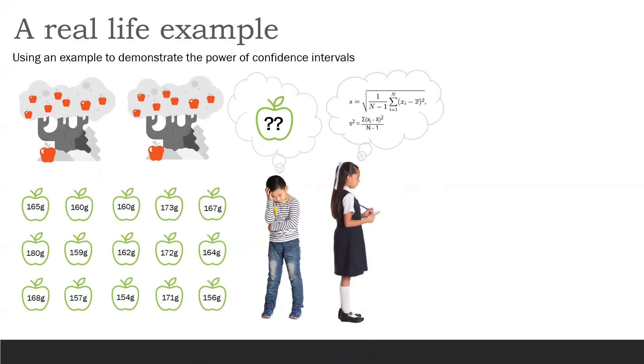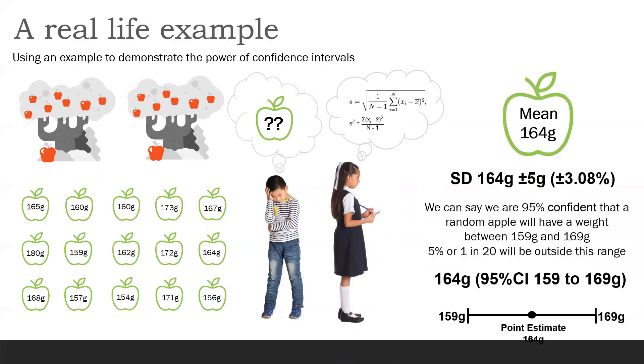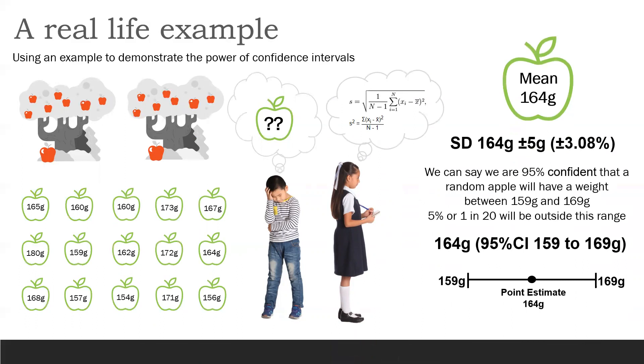Now, we know we want 95% confidence, so we would take two standard deviations and find that the average apple is 164 grams, give or take 5 grams. It's this give or take part that represents the upper and lower limits of the confidence interval. The 164 grams is your point estimate.